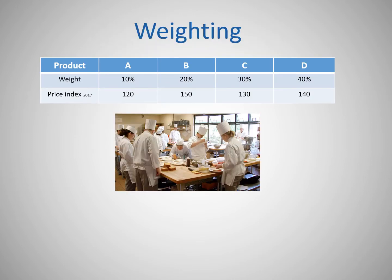The table shows the cost of four raw materials that a company uses in the production process in 2020. It gives the price indices for each product based on 2017. These represent the current prices of each product, where 2017 equals 100.